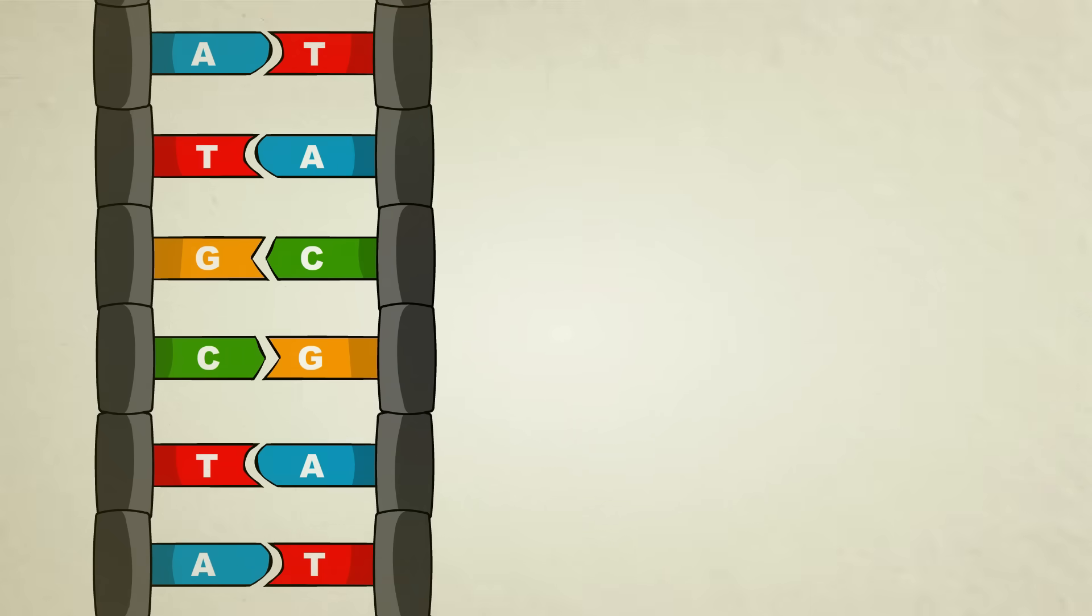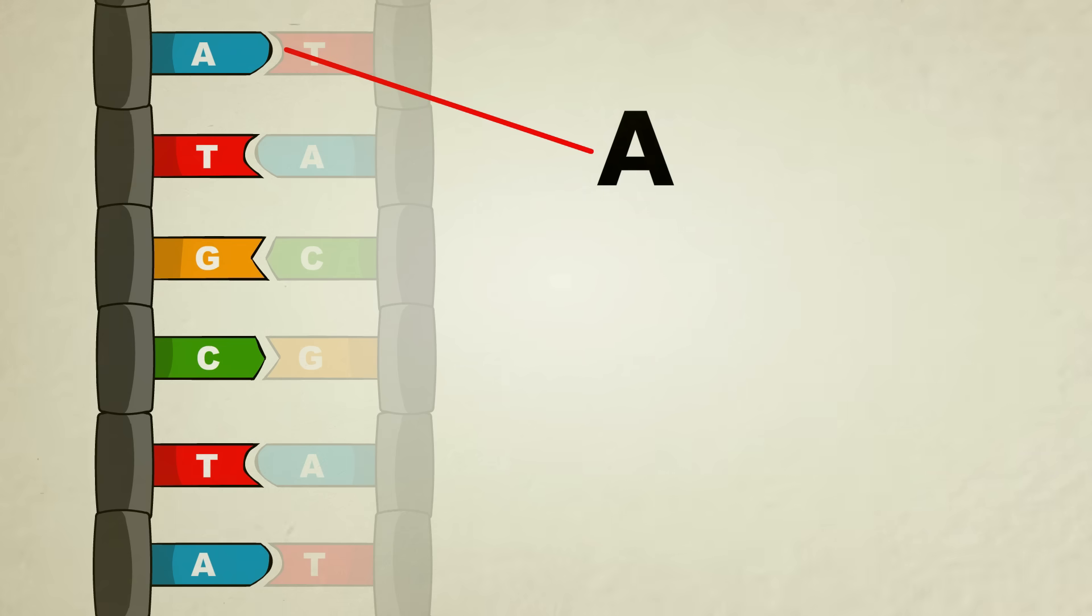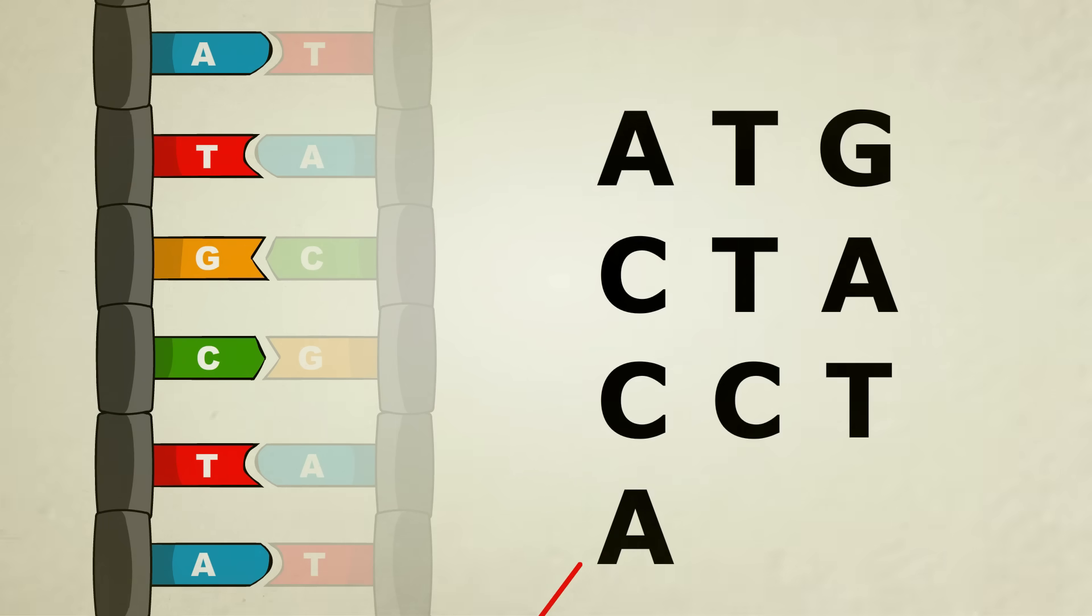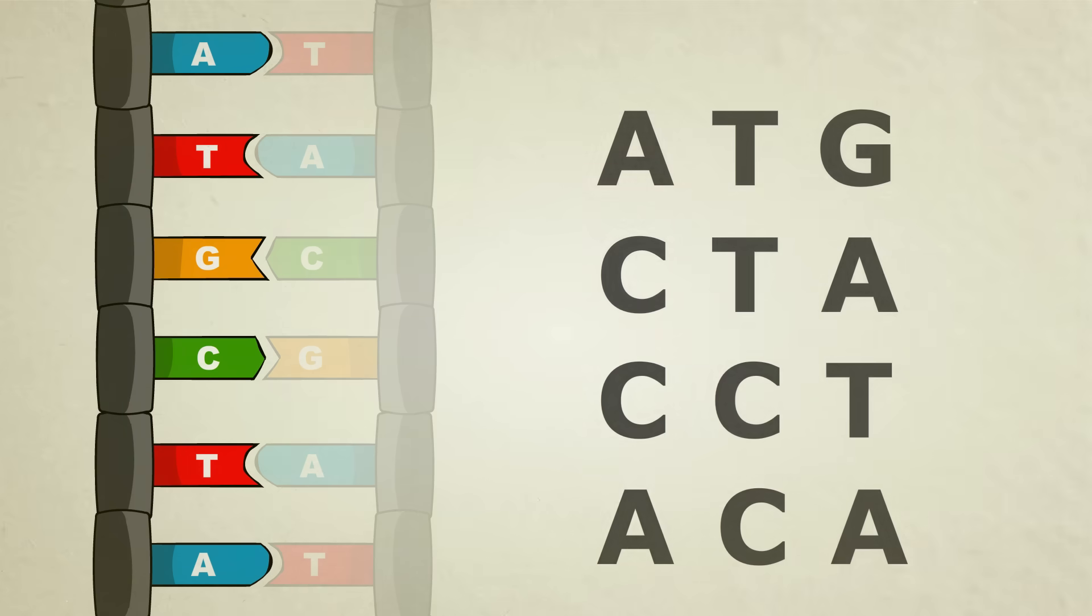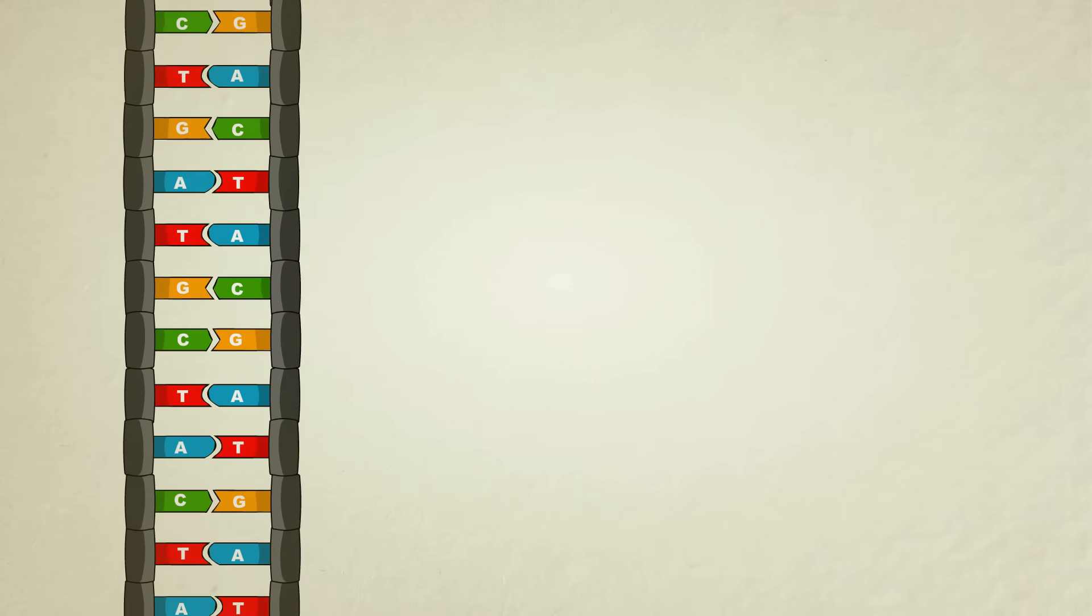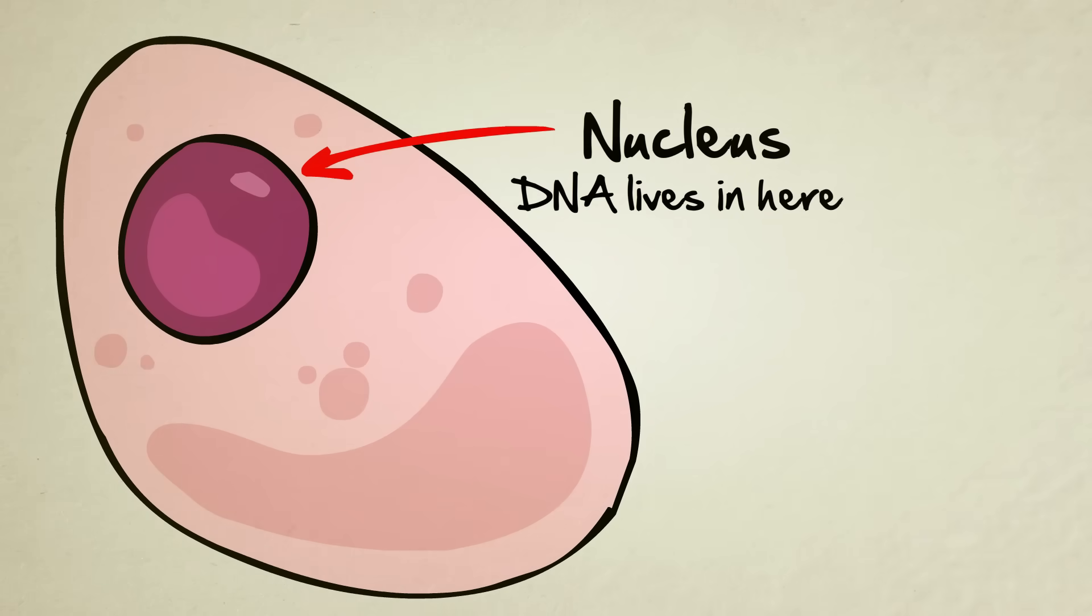This here is a simplified model of DNA. It shows us that the steps of the ladder are made up of four different kinds of chemicals shown here by different colors and letters. If you look at just one half of the molecule, you can read its chemical sequence or genetic code from top to bottom sort of like a book. A single strand of DNA is extremely long, millions of letters long. It spends most of its life coiled up like a noodle living inside the nucleus or the centerpiece of a cell.